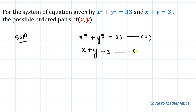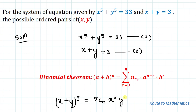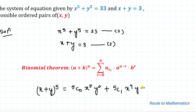In the first step, we apply the binomial theorem expansion: (a + b)ⁿ = Σ from r=0 to n of C(n,r) · aⁿ⁻ʳ · bʳ. Here we set a = x, b = y, and n = 5. Applying the binomial expansion, (x + y)⁵ = 5C0·x⁵y⁰ + 5C1·x⁴y + 5C2·x³y².